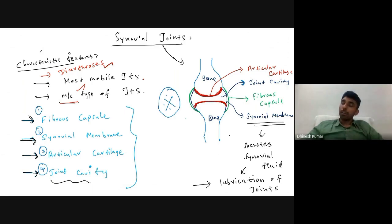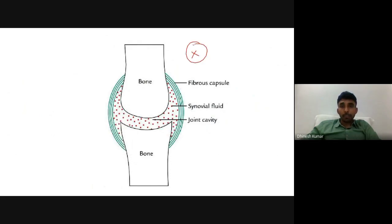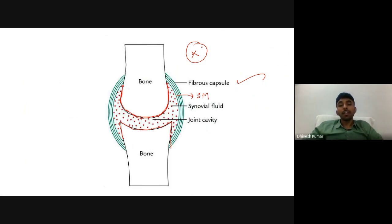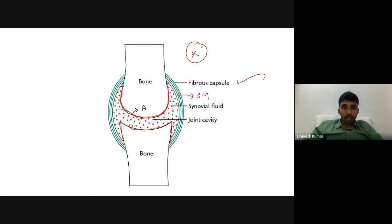Please practice this diagram of the synovial joint showing the fibrous capsule, the articular cartilage (shown in red), the synovial membrane lining the inner aspect of the fibrous capsule, and the joint cavity filled with synovial fluid.